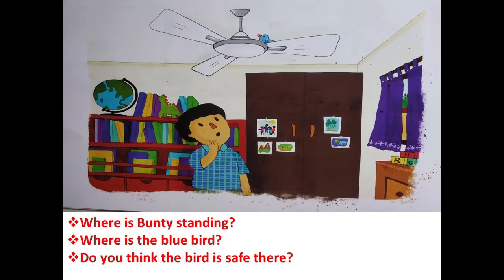Look at the picture carefully, children. Where is Bantu standing? He's in a room, so where exactly is he standing? Now the next question: where is the blue bird? Look at the picture carefully and answer.